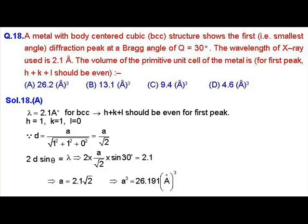It will come as A by root 2. So, we can use Bragg equation that is 2d sin theta equals to N lambda and put all the values and we can find the value of A, that is the length of the BCC structure. It will come as 2.1 into root 2. Further, because we have to find the volume of the cube, our answer will be A cube, which will come as 26.19 angstrom cube. So, the correct answer will be option A.